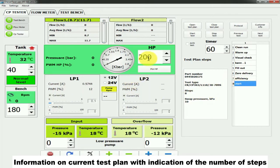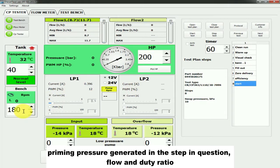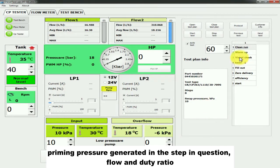Information on the current test plan with indication of the number of steps, priming pressure generated in the step in question, flow and duty ratio. Pressure value in the rail.